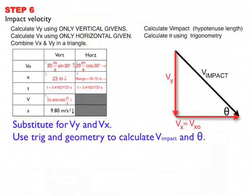So for my data table, I've just found the vertical velocity of impact, so I'm going to write that in as 23.469. And horizontally, it's still 20 meters per second cosine 30. Now I've got the lengths of two sides of the triangle. All I have to do is find the third.